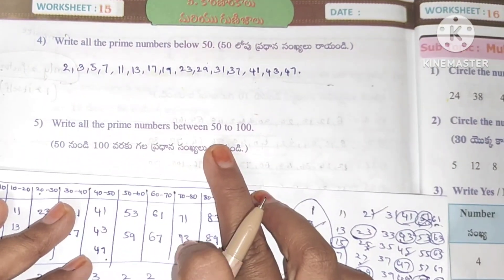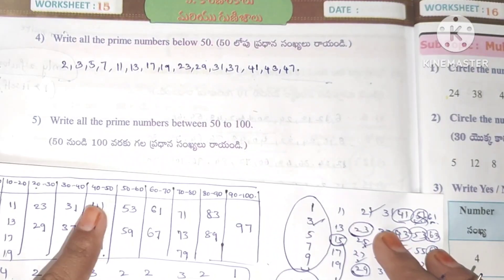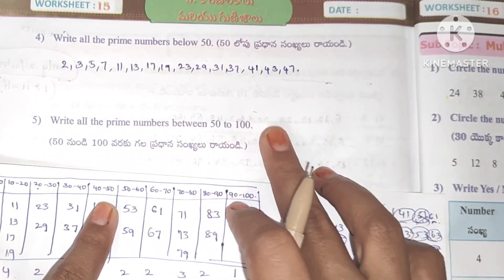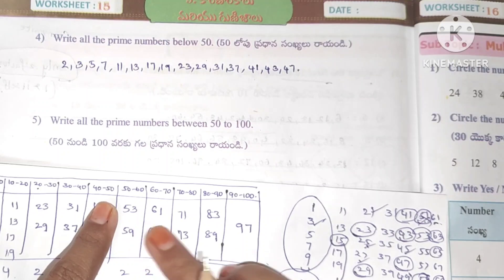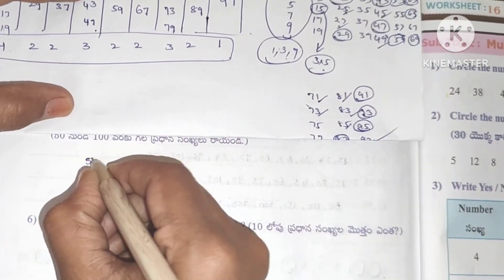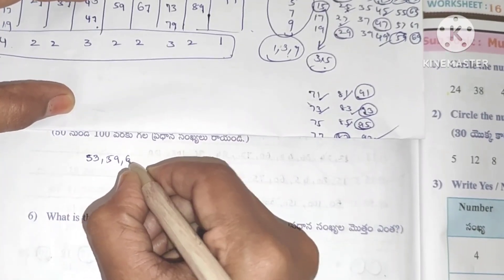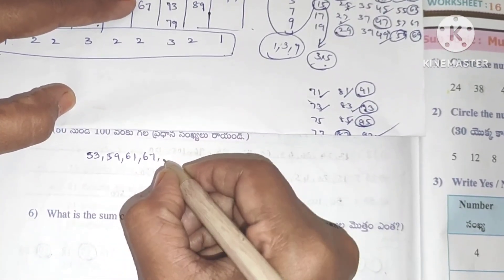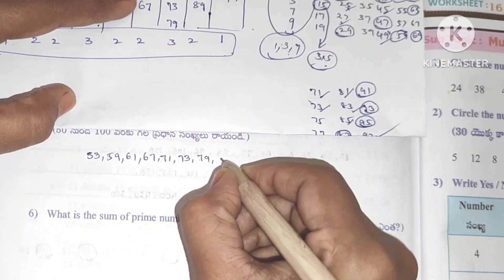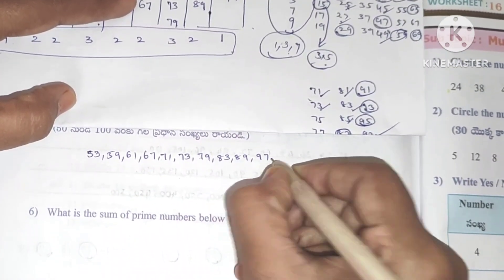Next: write all the prime numbers between 50 and 100. Prime numbers from 50 to 100 are: 53, 59, 61, 67, 71, 73, 79, 83, 89, 97.